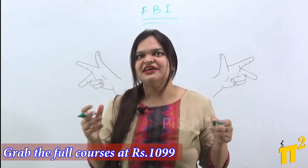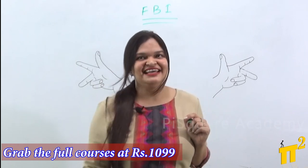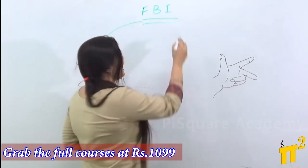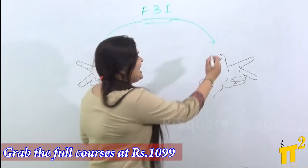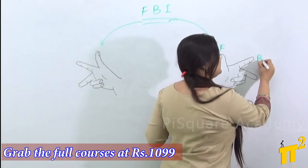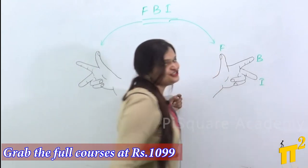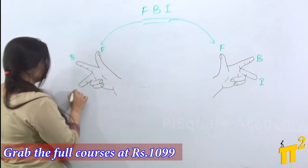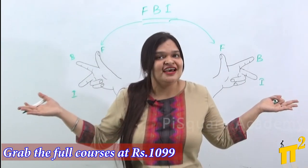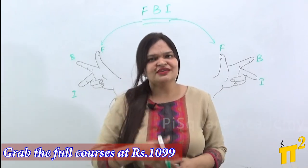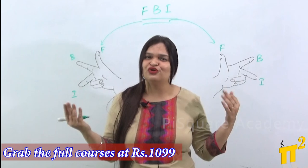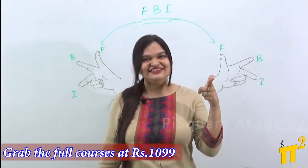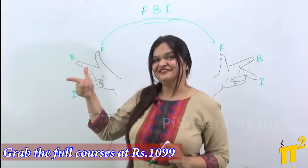I'll also give you a bonus tip today — watch the video till the end. So FBI: I can apply this rule to both the right hand and the left hand rule. F is Force, B is Magnetic Flux, and I is the Current or EMF. The same applies to the right hand rule: Force, Magnetic Flux Density, Current or EMF. So your problem is solved. If the interviewer asks you about Fleming's Left Hand Rule or Right Hand Rule, directly give it a shot — FBI: Force, Magnetic Field, Current.